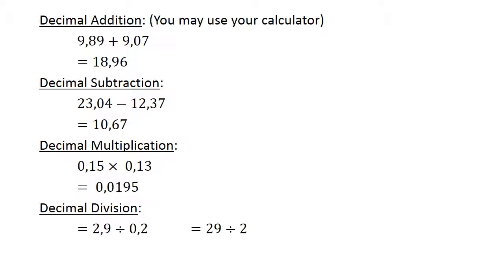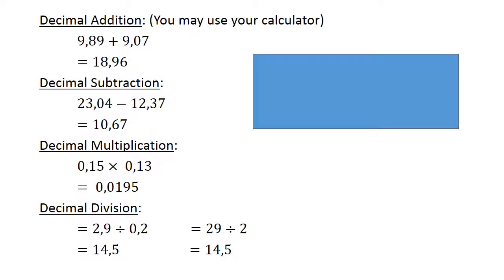Decimal division. 2.9 divided by 0.2. Multiply both with 10 to get whole numbers. 29 divided by 2 equals 14.5.